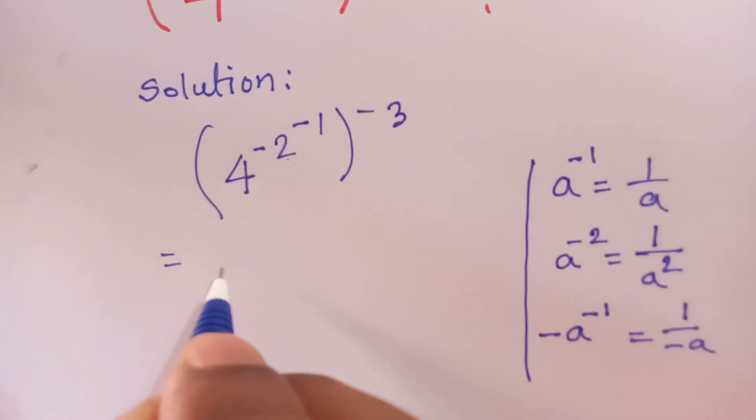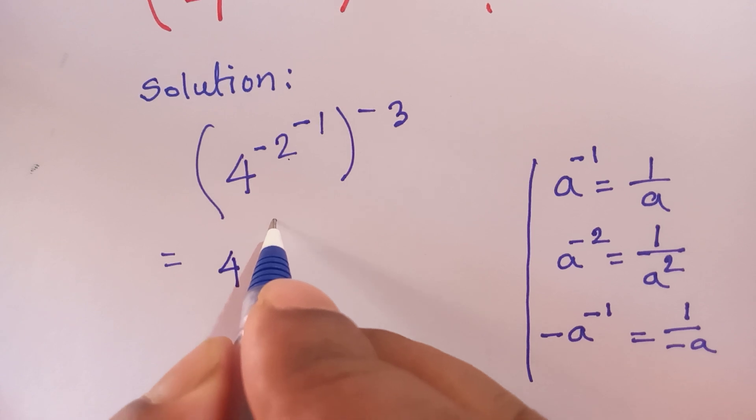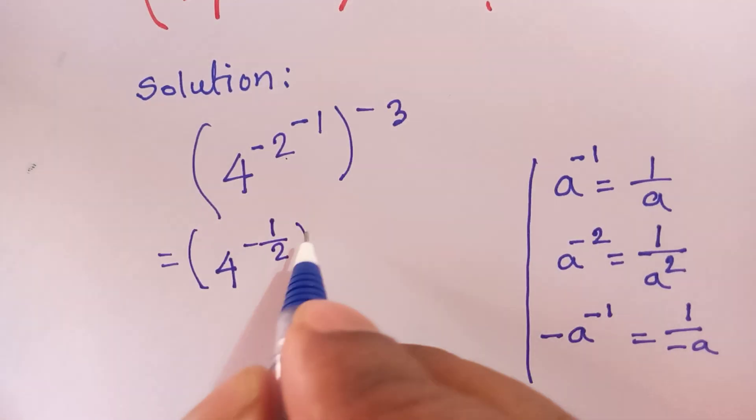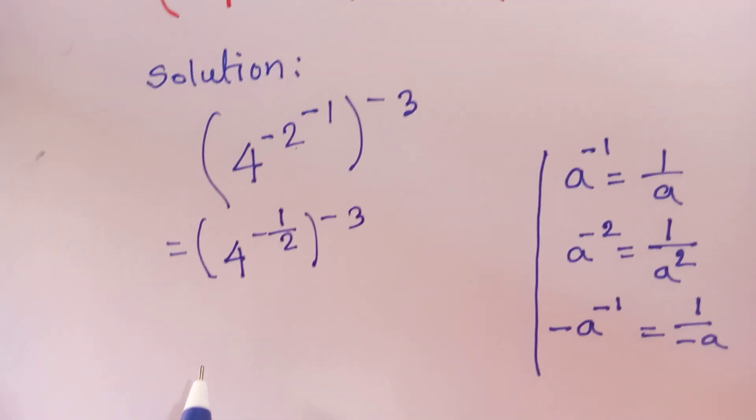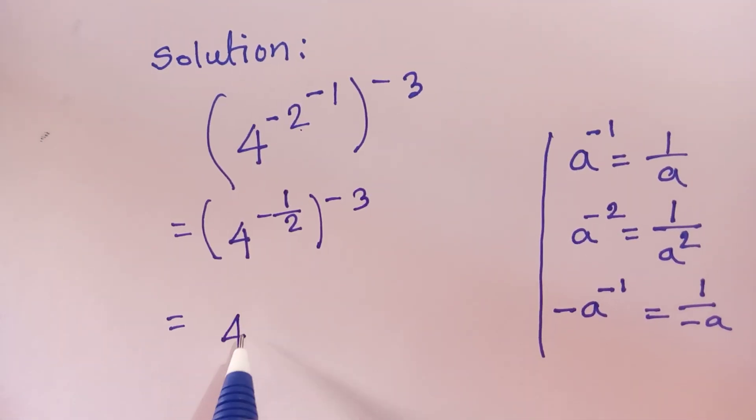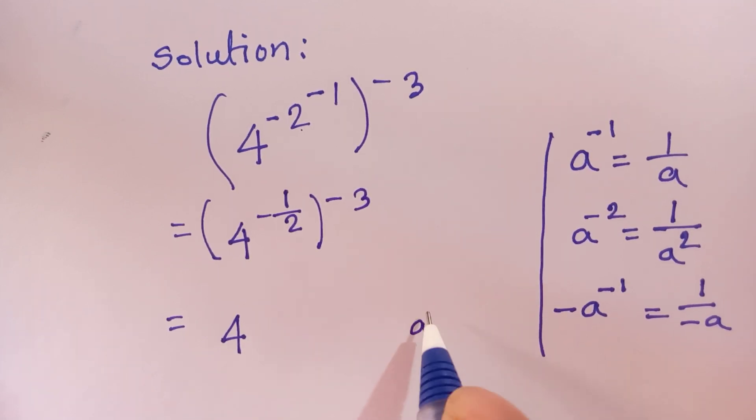So we can write here 4^(1 over -2) raised to the -3. Now for this 4^..., we know another exponent rule: (a^m)^n...